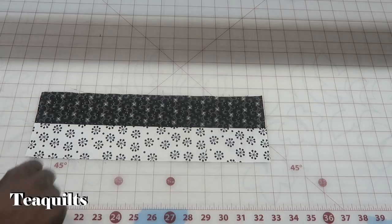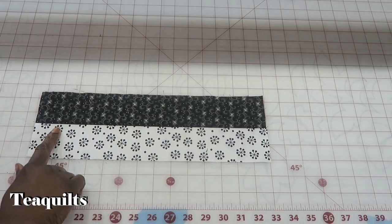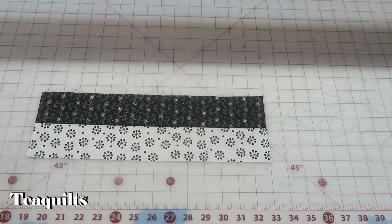Now that I have this strip set sewn I want to cut it into three four and a half inch pieces.